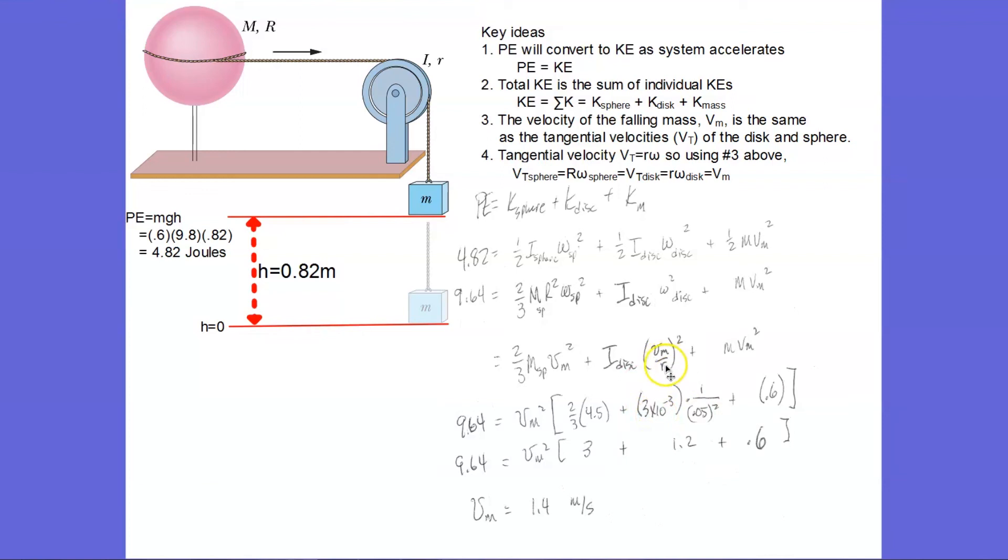And the radius of my disk is 5 centimeters. The mass of my falling weight is 600 grams. So now I can solve that for vm. And there is my answer.